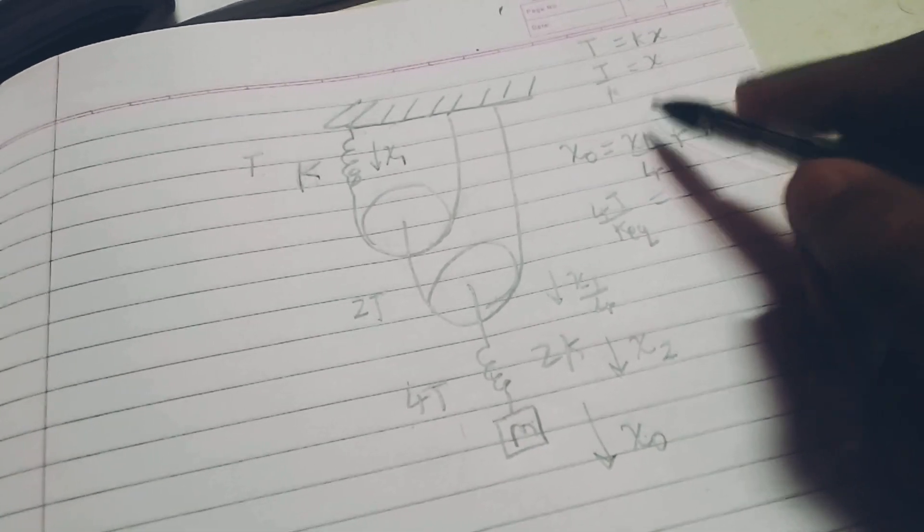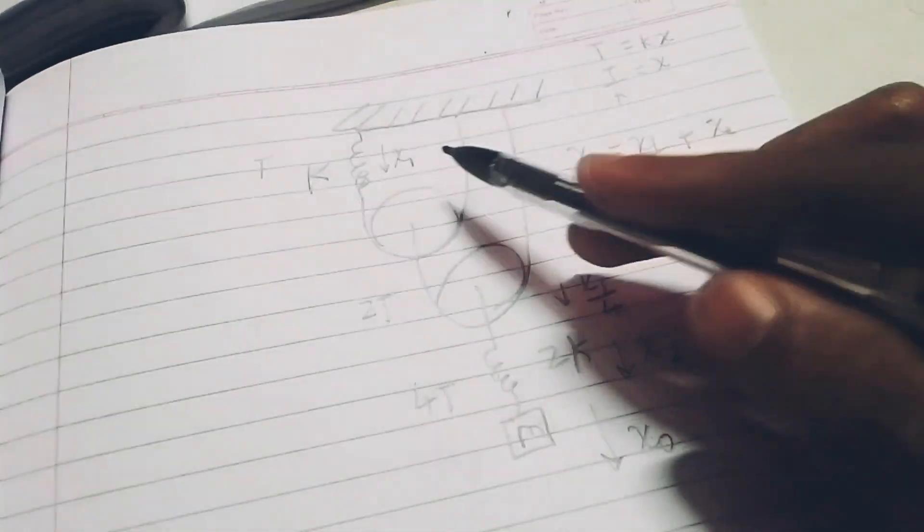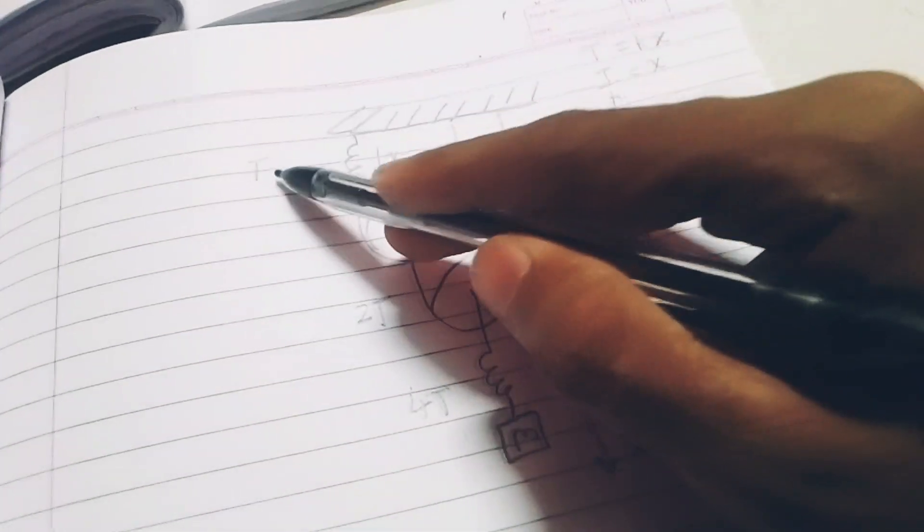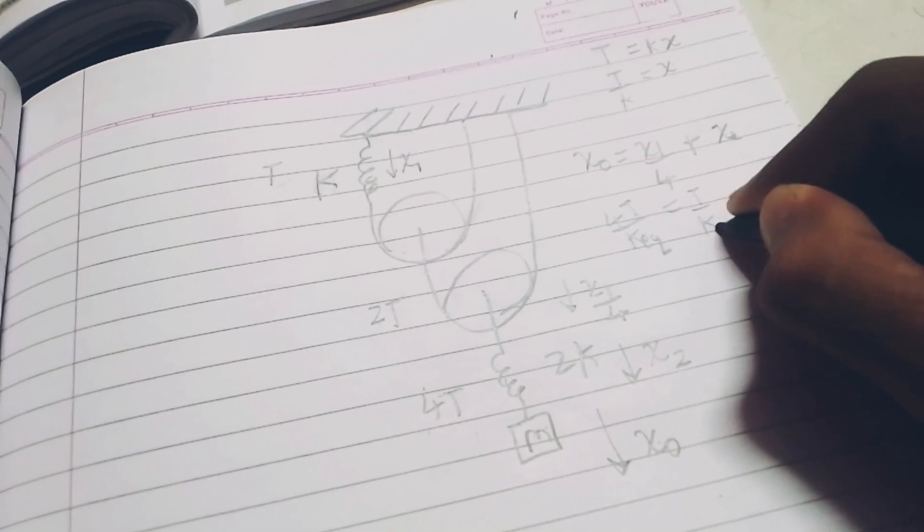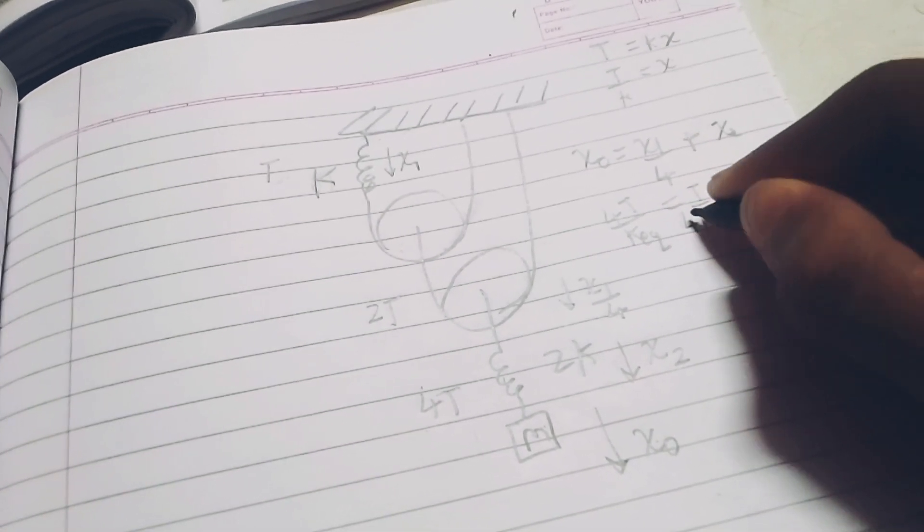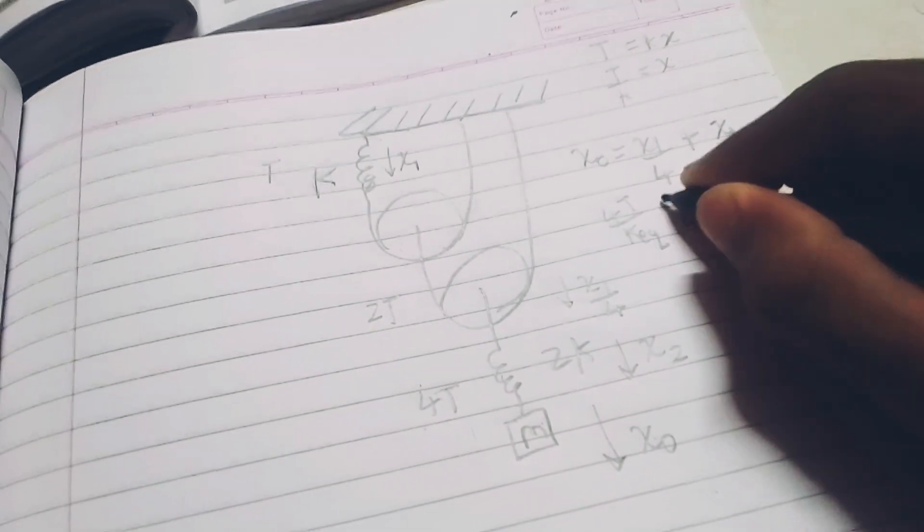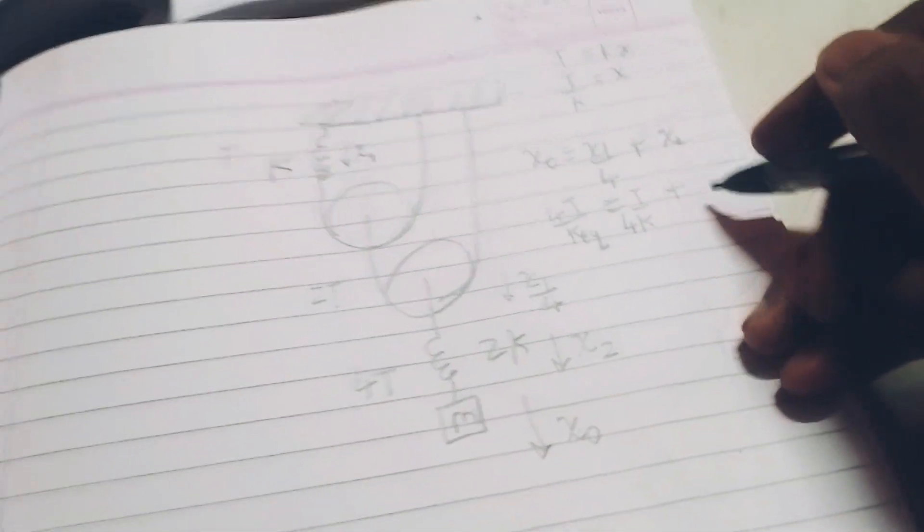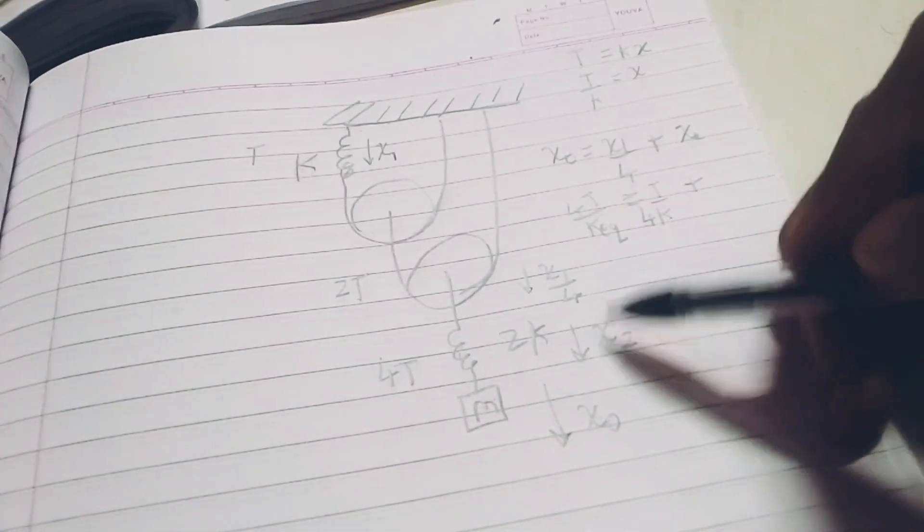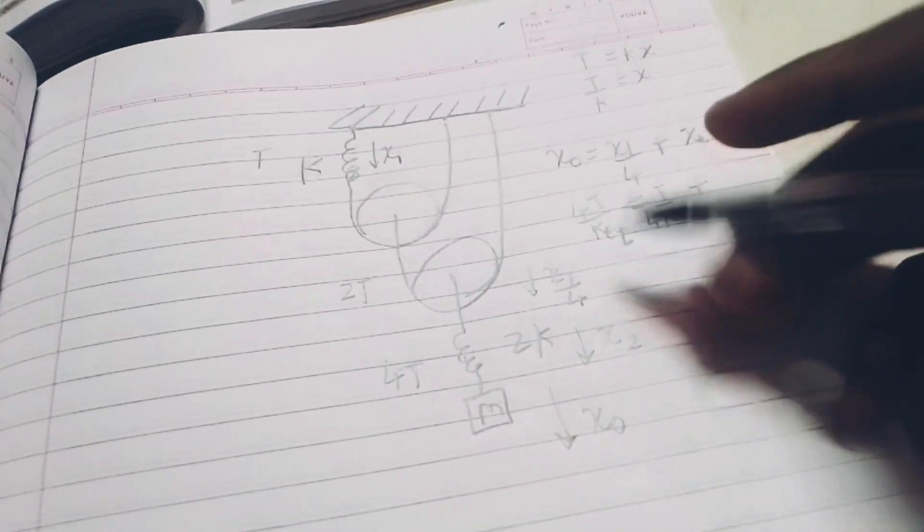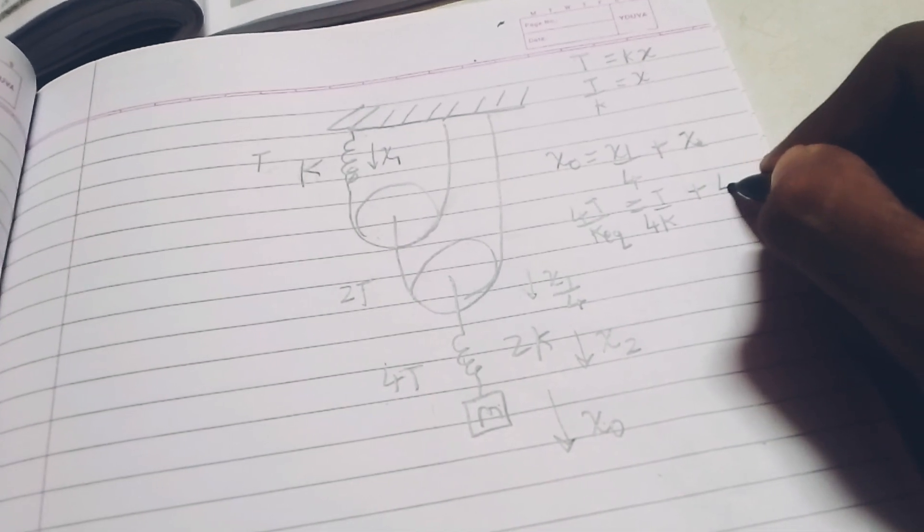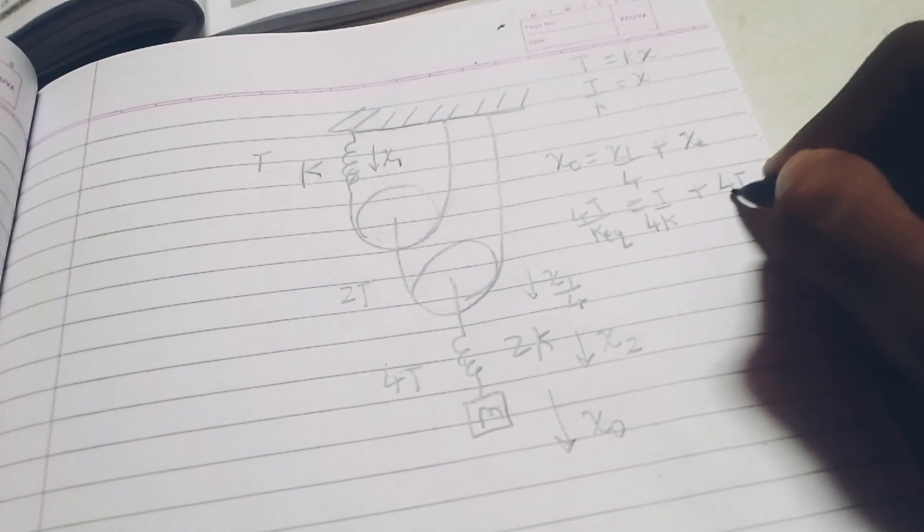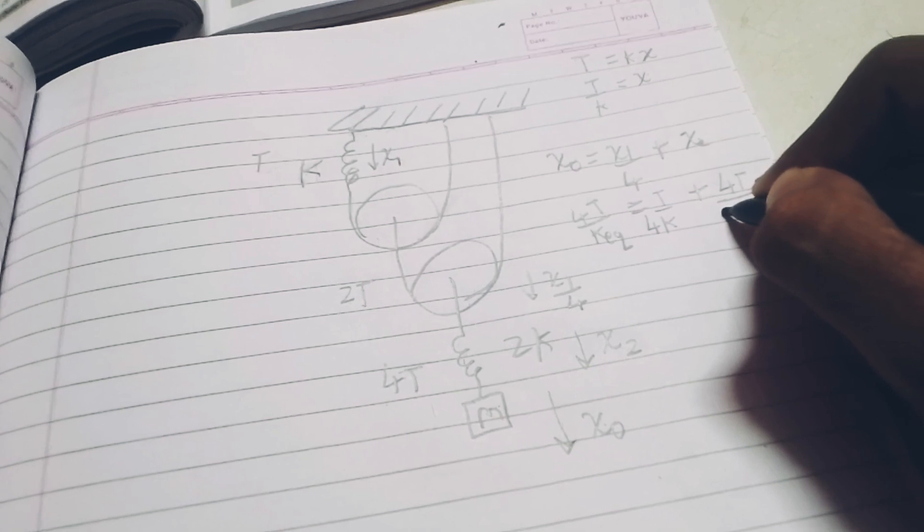What is x1? x1 is T by k. So, at point x1 it is T by k. So, T by k and 4 was from prior, plus what is x2? This is x2. So, I have x2 as 4T by 2k.